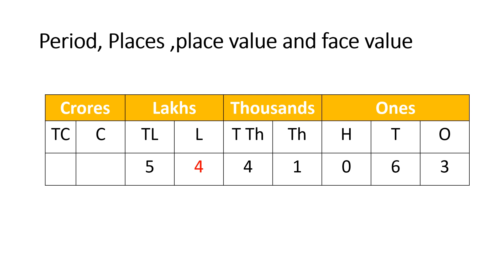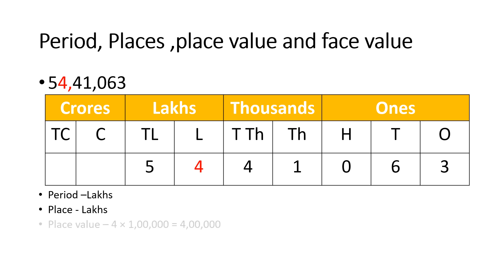Now let's find the period, place, place value, and face value for a given digit in a number. Here is the number 54,041,063 and the given digit is 4, which is highlighted. I have written this number in the Indian place value chart. For the digit 4, the period is lakhs, the place is also lakhs, the place value is 4 multiplied by 1 lakh which equals 4 lakh, and the face value is the digit itself, which is 4.